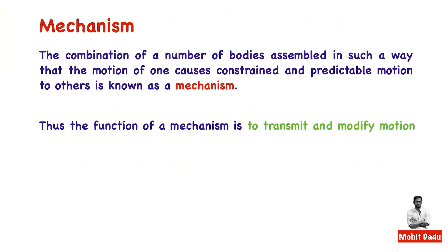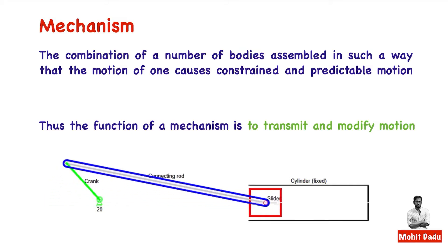First you have to understand what is a mechanism and what is a machine. A mechanism is simply a combination of bodies or elements assembled in such a way that the motion of one element causes constrained and predictable motion in another. The purpose of a mechanism is to transmit and modify motion.